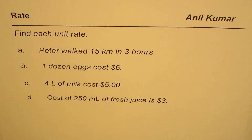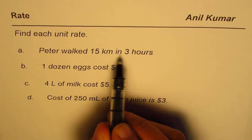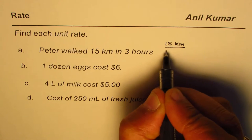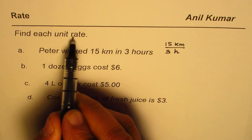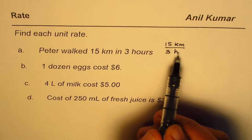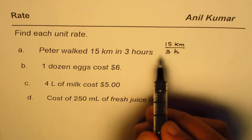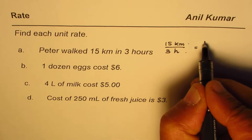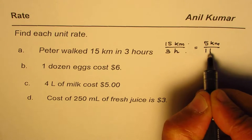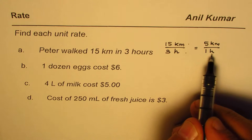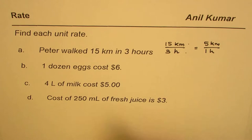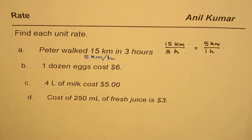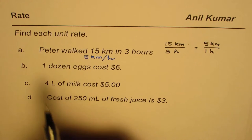Let's begin with the first one: Peter walked 15 kilometers in three hours. We need to find the unit rate, meaning how much will Peter walk in one hour. If you divide both by three, you get five kilometers in one hour. Therefore we can write the unit rate as five kilometers per hour.